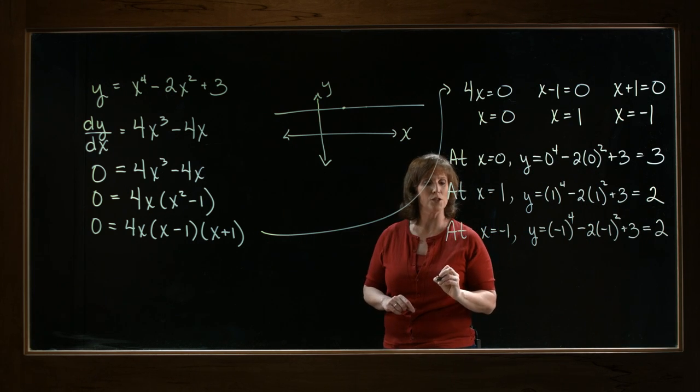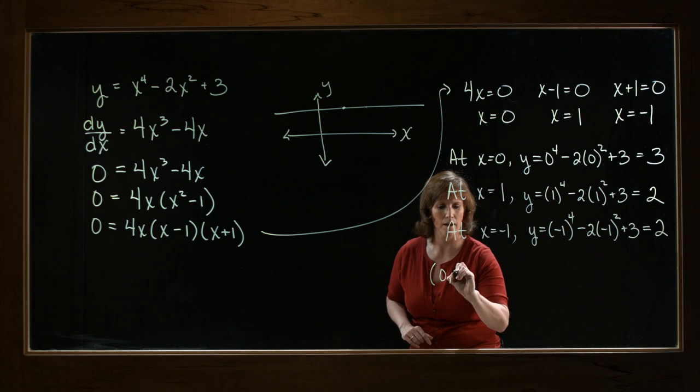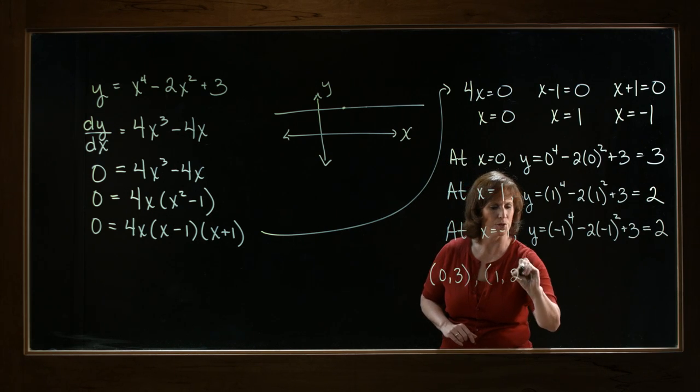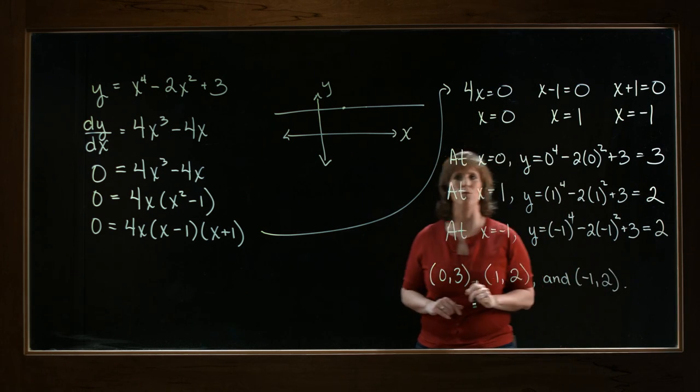So the points where the tangent is horizontal will be the point 0, 3, 1, 2, and negative 1, 2.